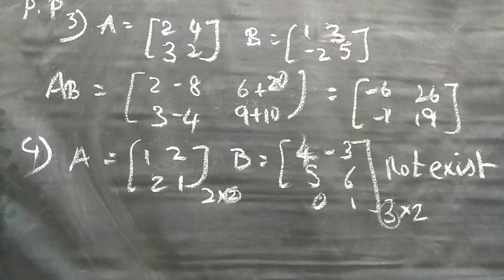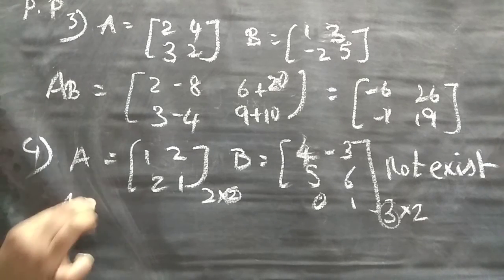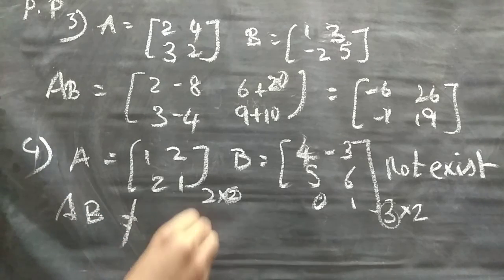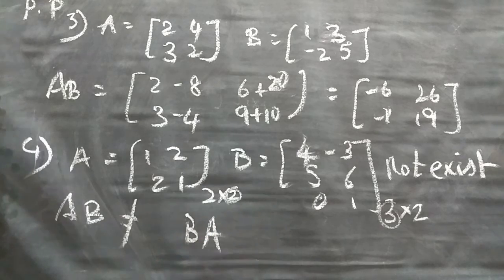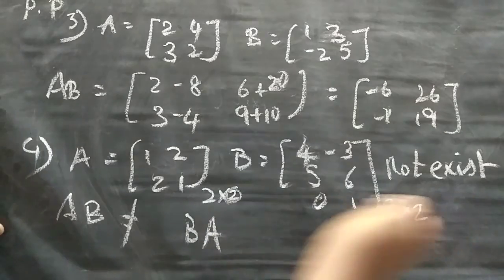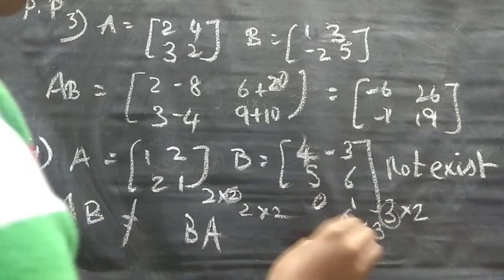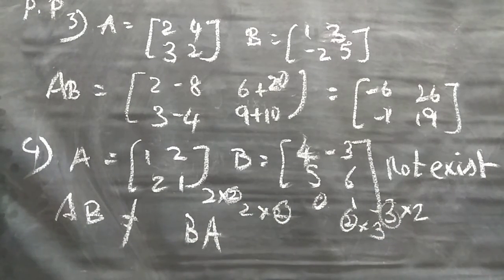But BA is possible. AB is not possible. But BA is possible. BA means this one will be 2 cross 2. This one will be 2 cross 3. So 2, 2 same way. That's why BA will be possible. That option you can take it as option D.